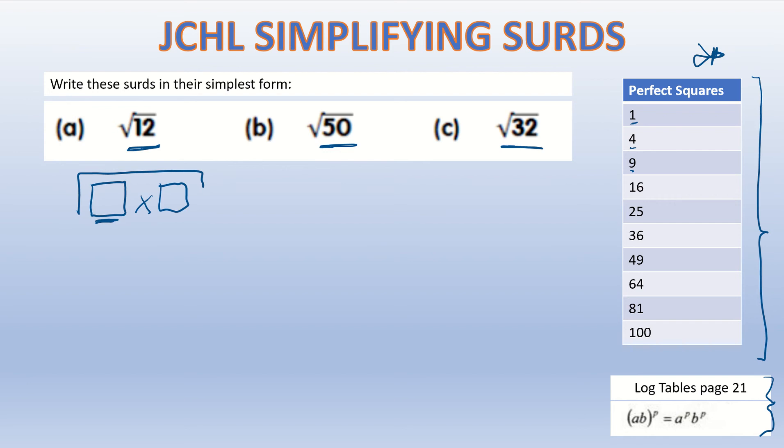If I think of my perfect squares, the one here will always divide into the number that you have underneath your square root. So for these sort of questions we ignore the one because it's not going to help us simplify. If we work our way down our perfect squares, we see that 4 will go into 12, 9 won't, 16 won't, 25 won't, 36 won't.